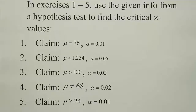In this video we're discussing how to use the graphing calculator to find critical z-values for a hypothesis testing procedure. There are three types of tests we conduct: the left-tailed test, the right-tailed test, or the two-tailed test. We need to figure out how to get the calculator to find the critical z-value in those three cases.